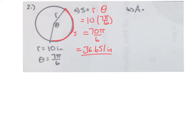Now when we're trying to find area, our formula is area is 1 half r squared theta.